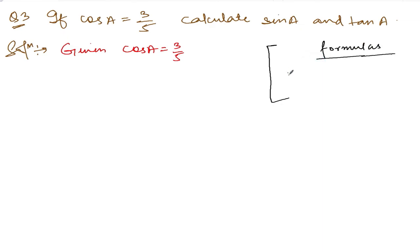The formulas will be: sin²a + cos²a = 1. This is one formula you are going to use. And for tan, you are going to use tan a = sin a/cos a. These two are the formulas that you need to understand.